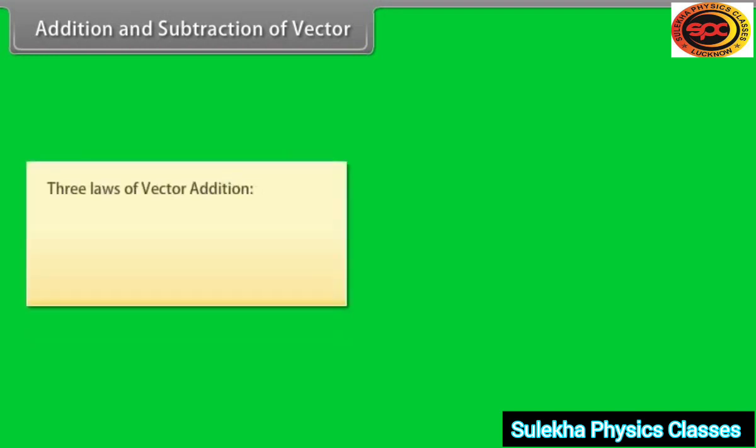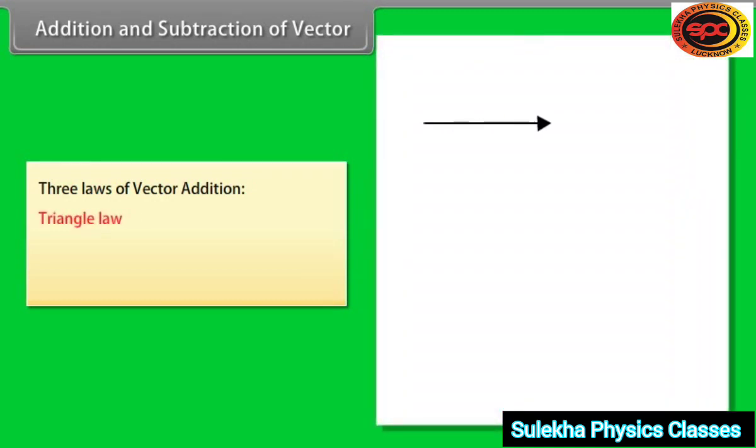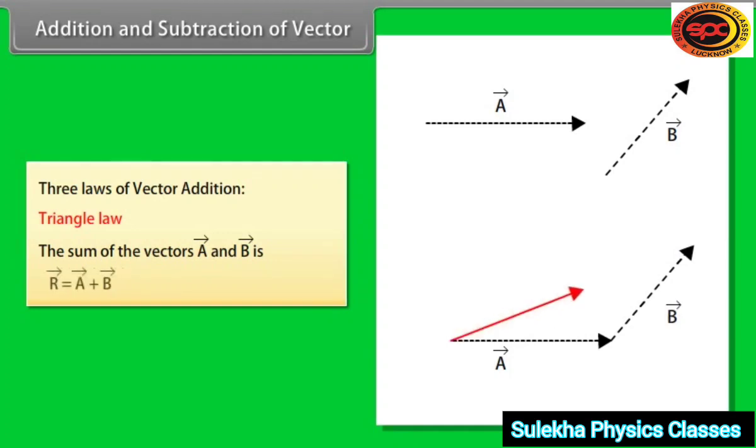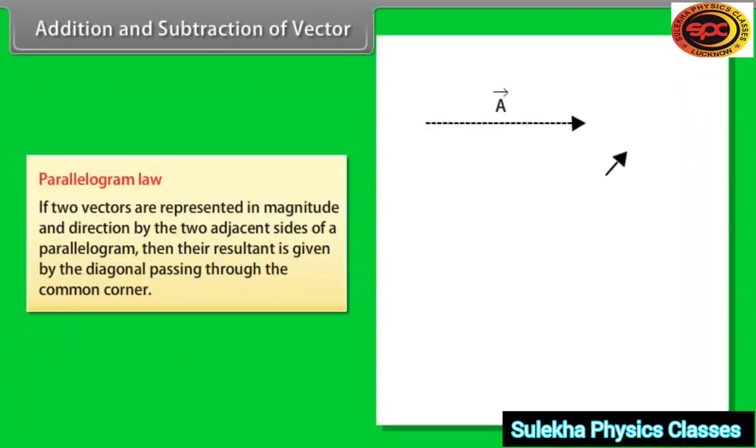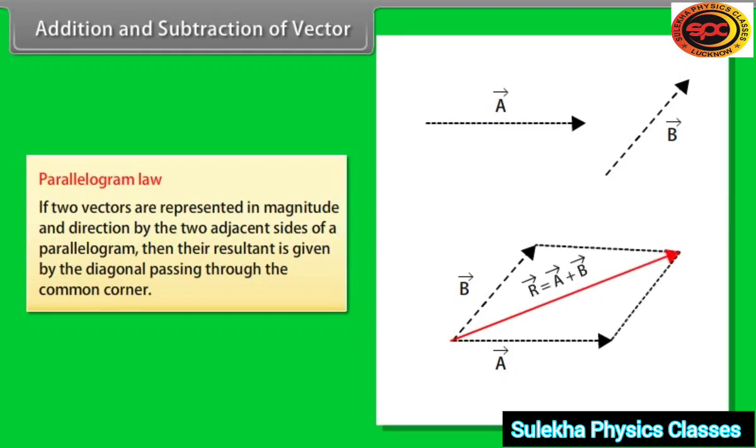Vector addition is done with the help of three laws. A. Triangle law: the sum of the vector A and vector B is R = A + B. B. Parallelogram law: if two vectors are represented in magnitude and direction by two adjacent sides of a parallelogram, then their resultant is given by the diagonal passing through the common corner.